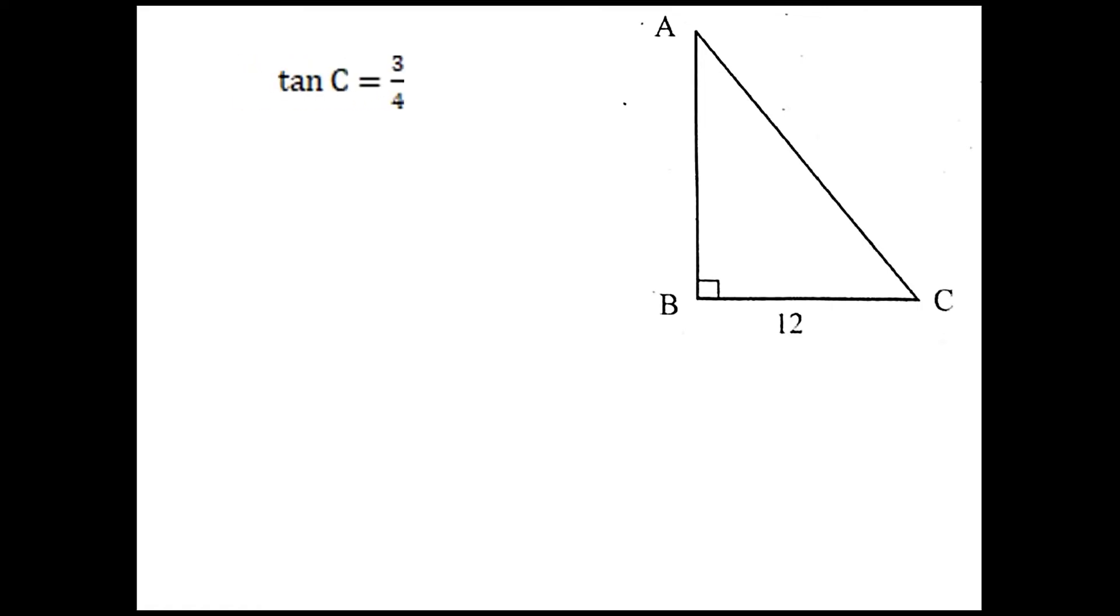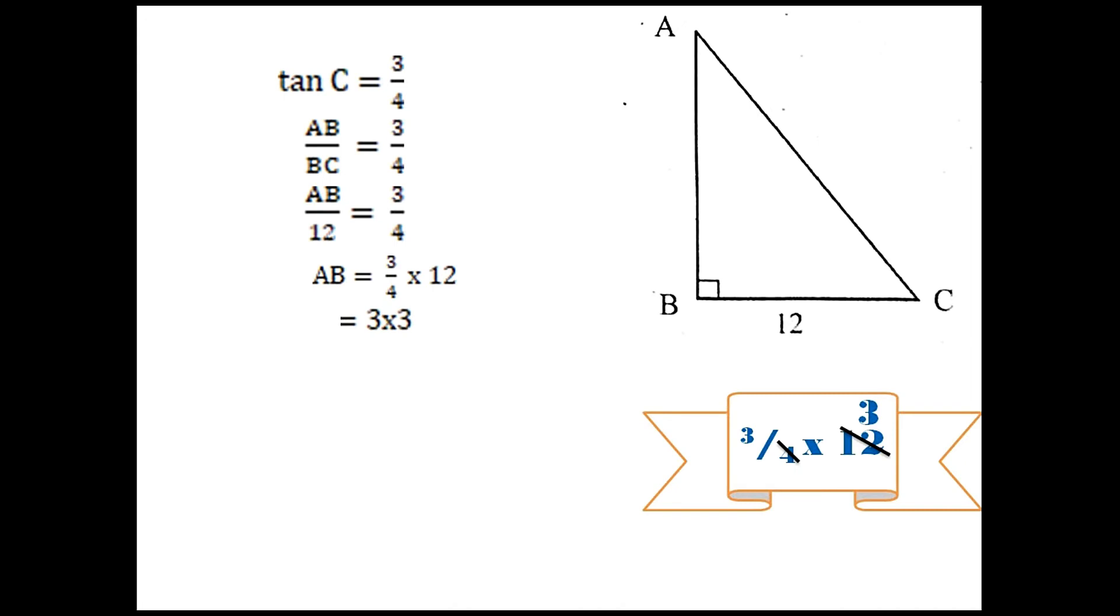What is tan? Opposite side by adjacent side. Here the opposite side of angle C is AB and the adjacent side is BC. So we can write AB/BC equals 3/4. But BC equals 12 centimeters, so AB/12 equals 3/4. Now AB equals 3/4 times 12. Three fours are done, so you get 3 times 3, so AB equals 9 centimeters.